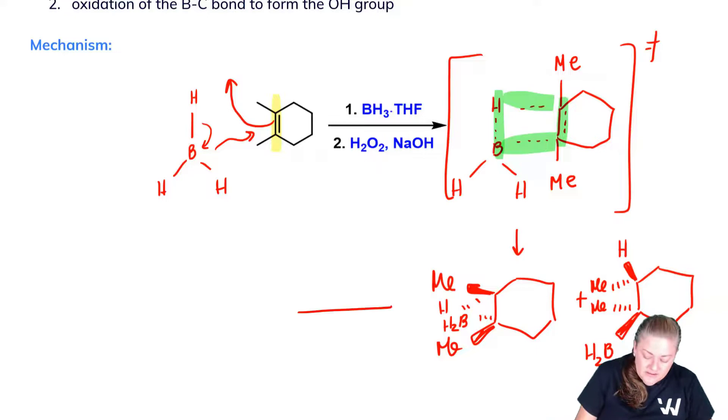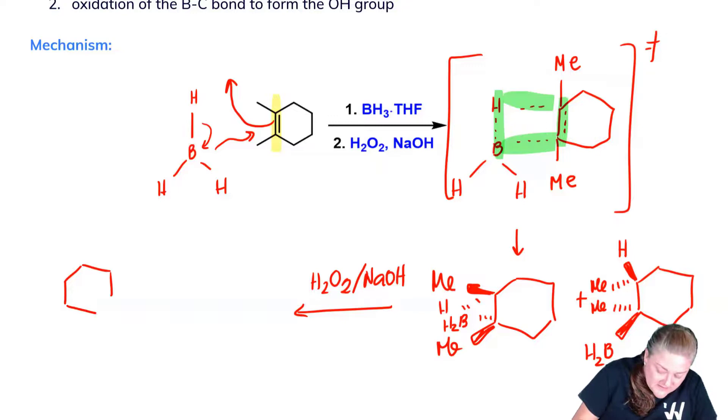At this point we add hydrogen peroxide and base—this is the oxidation part of the reaction. What we get is cleavage of the carbon-boron bond and formation of the carbon-OH bond. This is the part of the mechanism you don't need to worry about, but I'll draw the two final products so we can see a complete reaction.